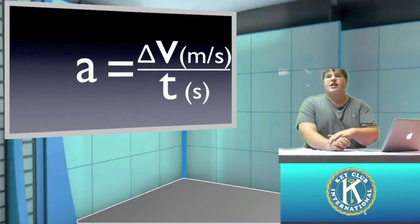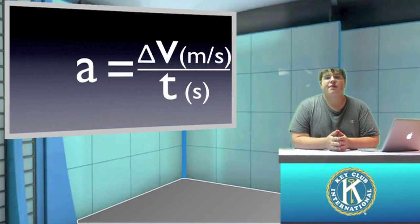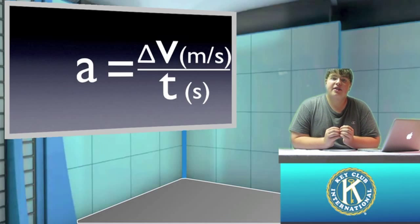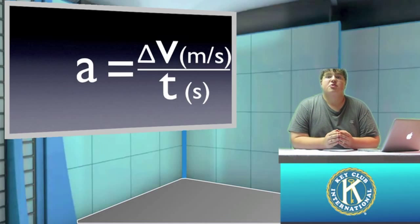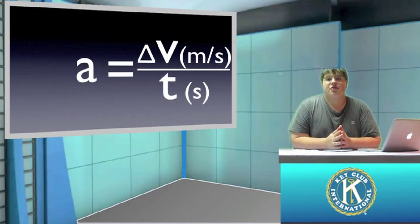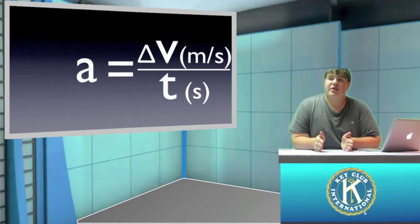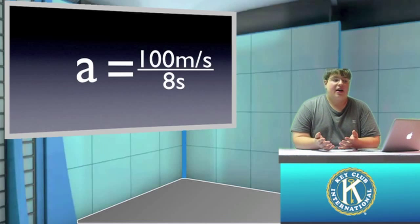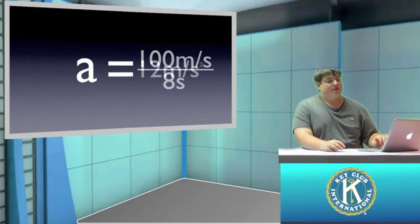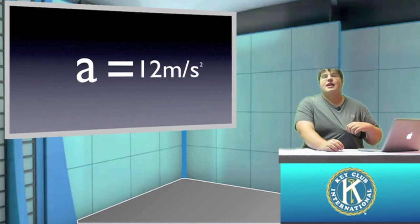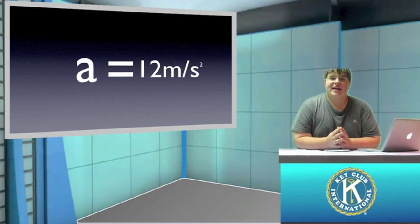So now let's find the acceleration of that dragster. The dragster started at 0 meters per second and its final velocity was 100 meters per second. So we do 100 minus 0 to get a change in velocity of 100 meters per second. It went from 0 to 100 meters per second in 8 seconds, so we divide 100 by 8 and find that the acceleration of this dragster is 12 meters per second squared.